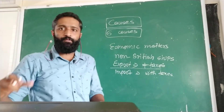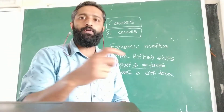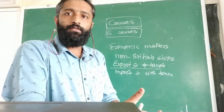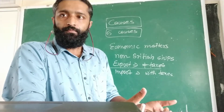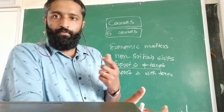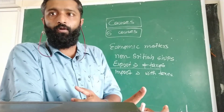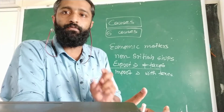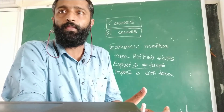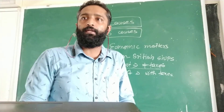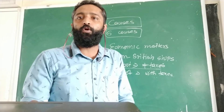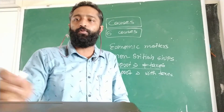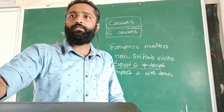This means all goods were taken from the colonies to Britain without any taxes, and all goods were given to the colonies with heavy taxes. So this is what makes up the first point: colonies were controlled by Britain in economic matters. Now we come to the second point.